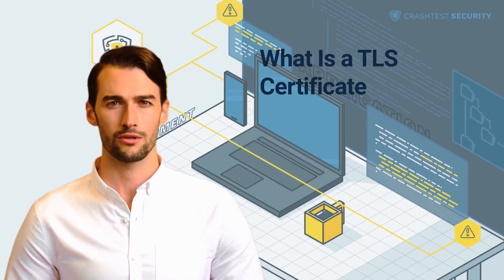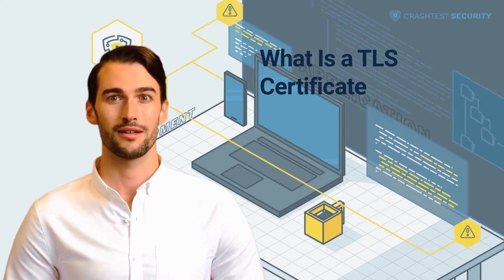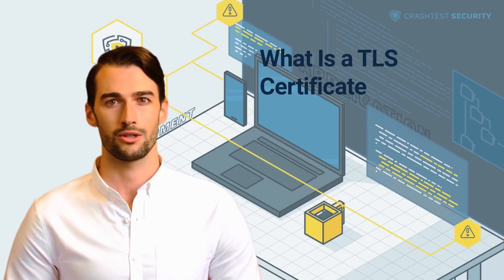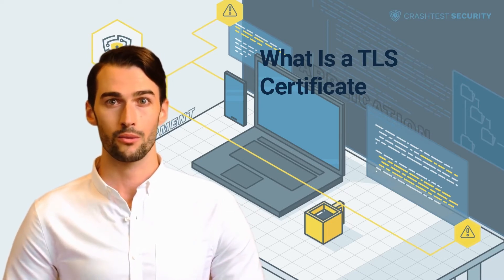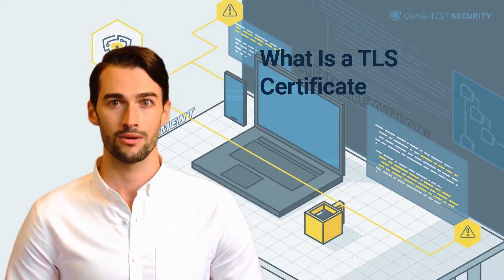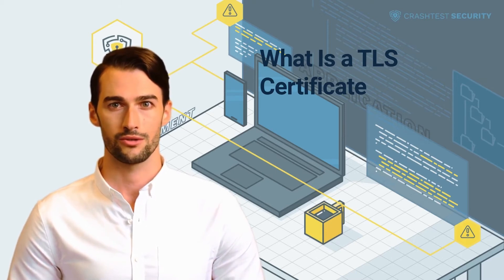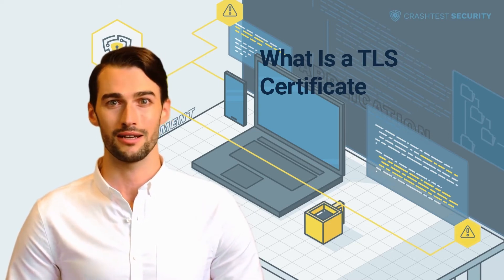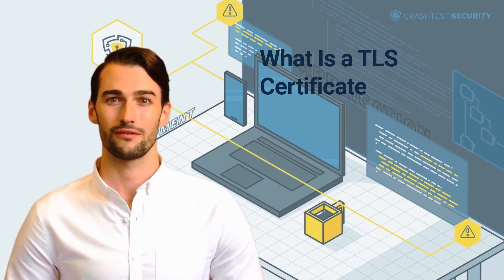The transport layer security protocol employs two types of keys for data encryption and authentication of users who can access it. These are the public key for external distribution and the private key, which should be kept securely. To get your X509v3 certificate signed by your CA, you generate your private key manually or through a tool. Then you send a Certificate Signing Request (CSR) to your CA for signing. It's imperative to use strong private keys. The industry standards are the 2048-bit RSA with SHA-256 key or 256-bit ECDSA with SHA-256 on the P256 curve key. Private keys have to be generated only by you.